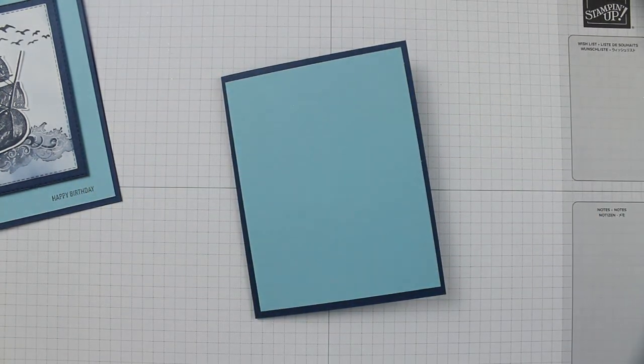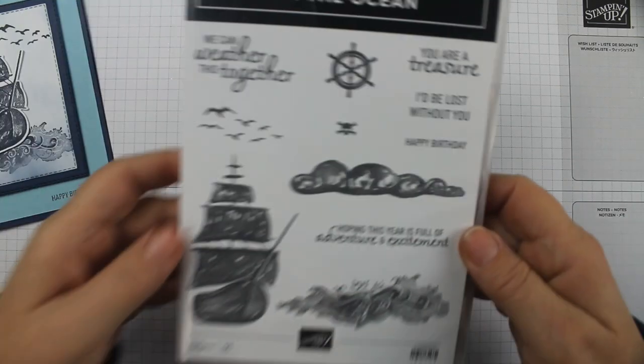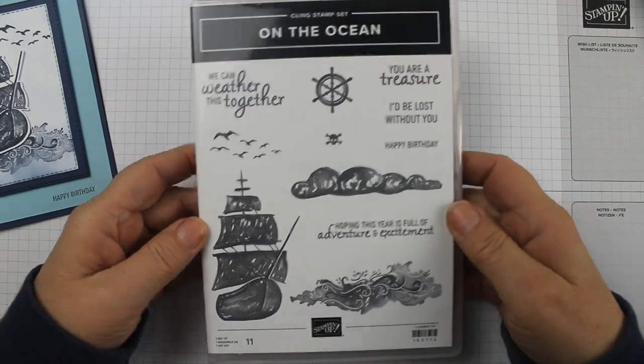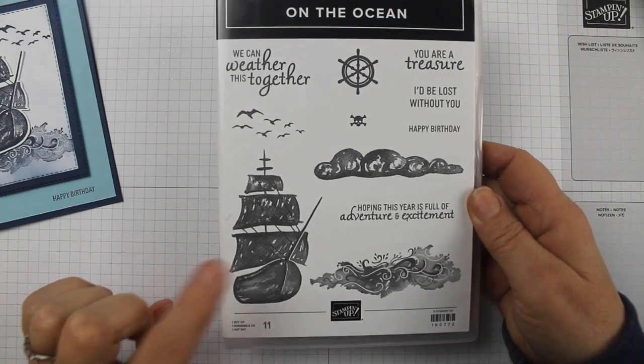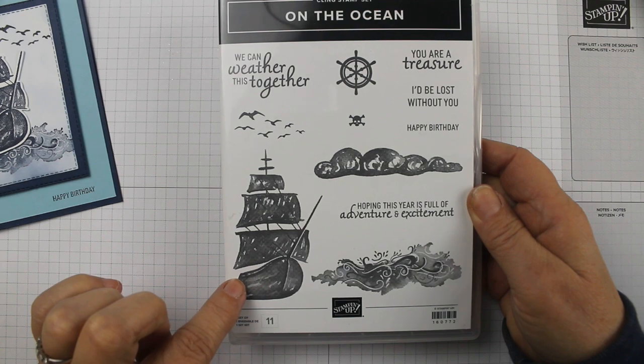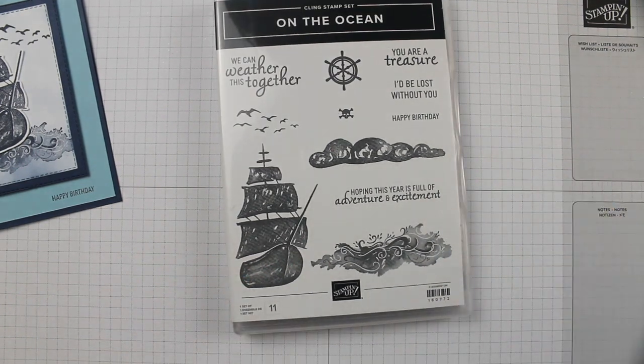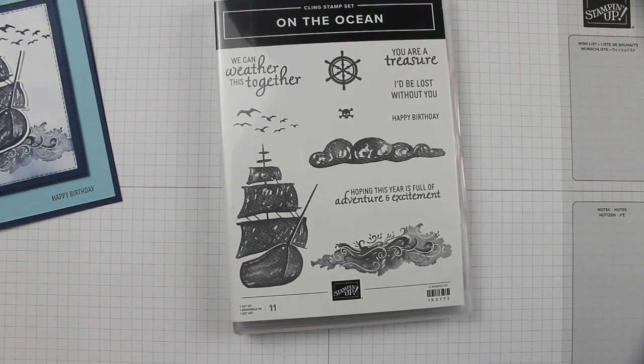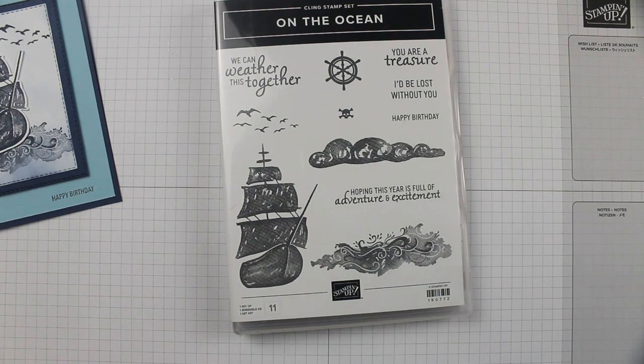Then I took from the On the Ocean stamp set, I took the ship and I stamped it in Night of Navy. Then I took the dies - the dies are wonderful. This one cuts out the image that you stamp of the ship.